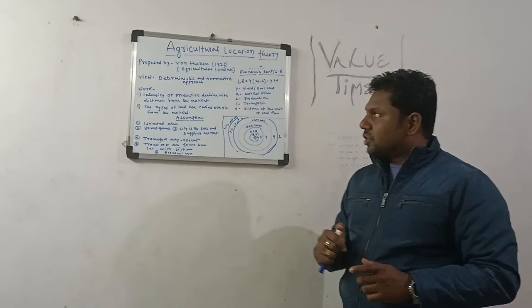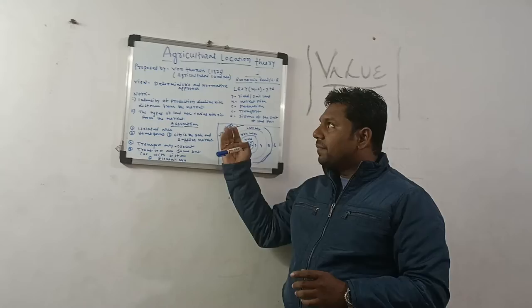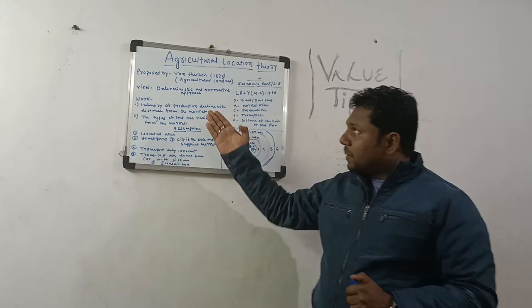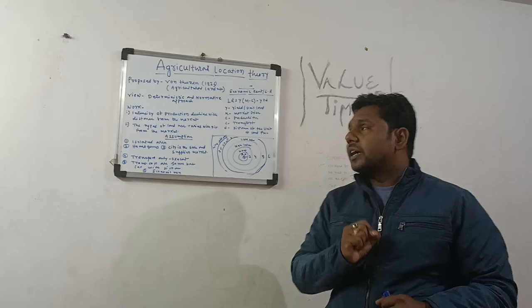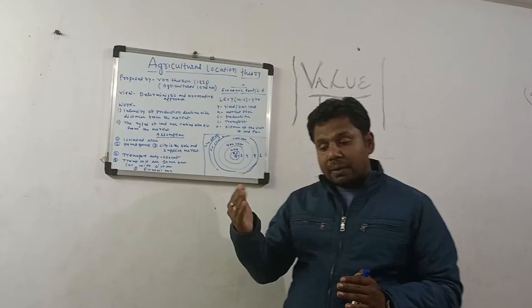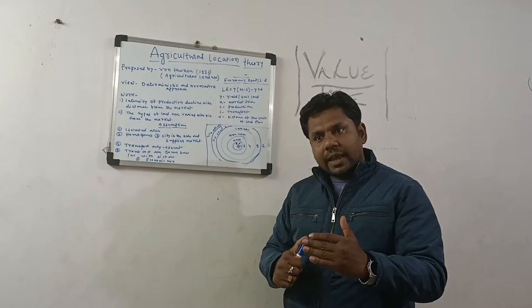We will see some assumptions and views in this video. First, we will see what the views and philosophy were. The philosophy was the deterministic and normative approach. The deterministic approach means that everything is controlled by nature — whatever the weather is, everything is controlled by nature.